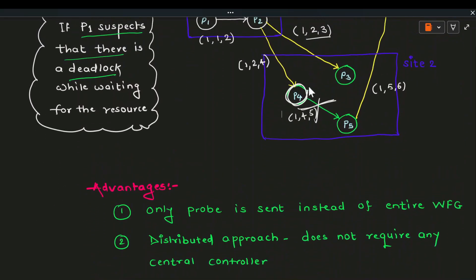The Chandy-Misra algorithm uses a probe message instead of the entire Wait-For Graph (WFG) used in the path-pushing algorithm. We have already seen Obermarck's path-pushing algorithm; you can refer to that video for more detail. Additionally, Chandy-Misra has a distributed approach with no need for a centralized controller.